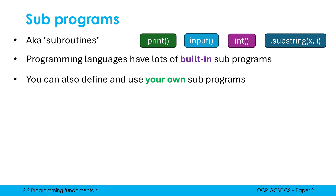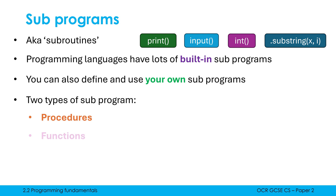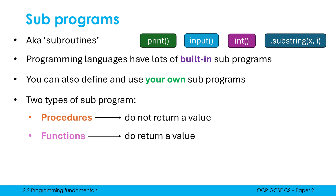As I've alluded to, there are two main types of subprogram at GCSE which we'll look at separately: procedures and functions. They're very similar in structure with just a slight tweak. Procedures do not return a value in their code; functions do return a value. I'll explain what that means when we come to the functions video. In the next video we'll look at how procedures work and some exam-style questions.